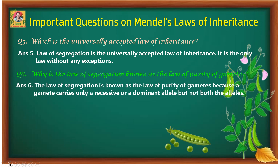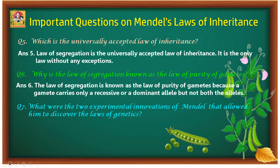Sixth question: why is the law of segregation known as the law of purity of gametes? The law of segregation is known as the law of purity of gametes because during gamete formation each gamete receives only one allele — it can be recessive or dominant, but never both alleles — and there is no mixing of alleles.